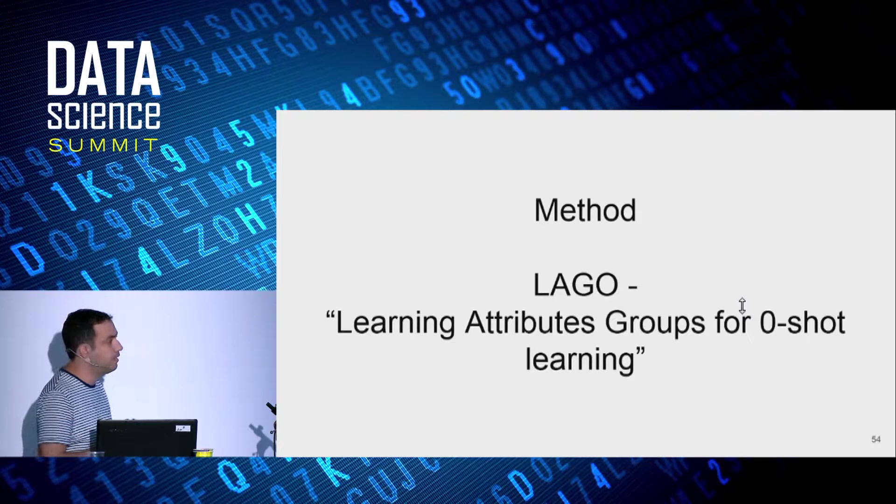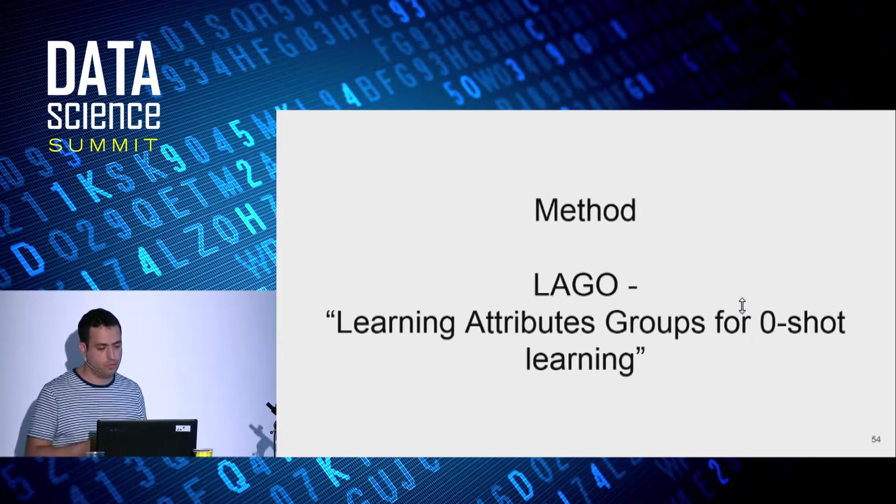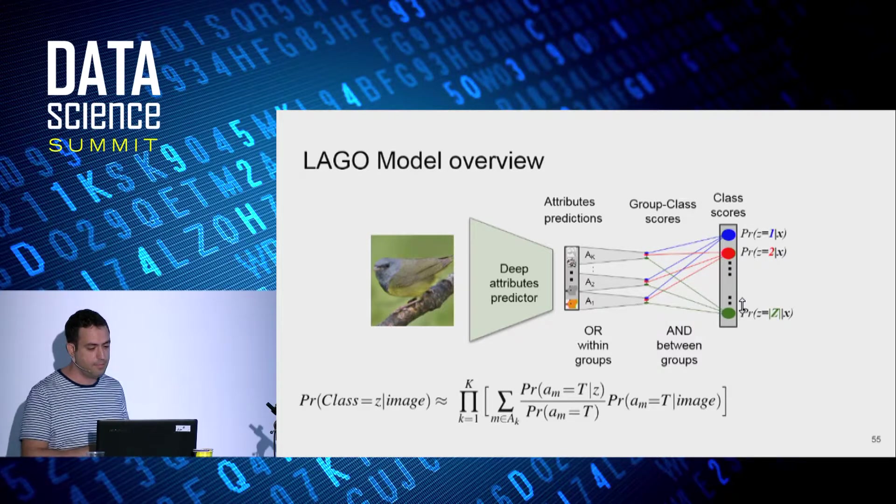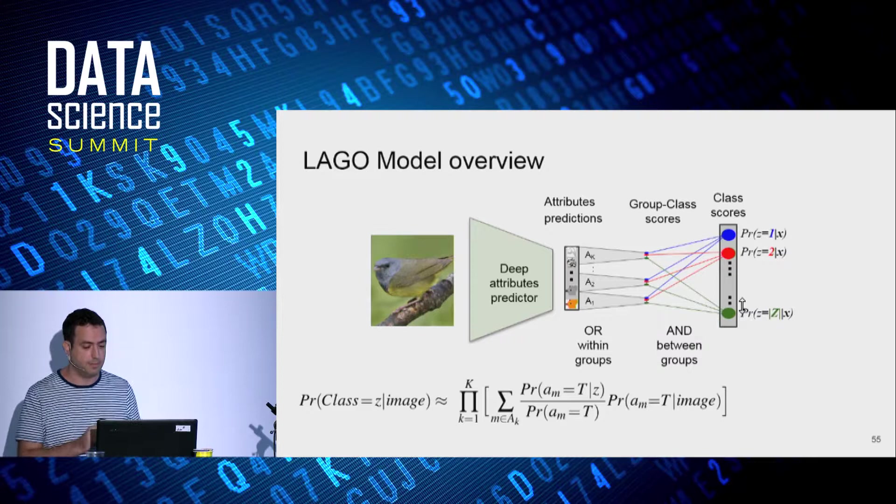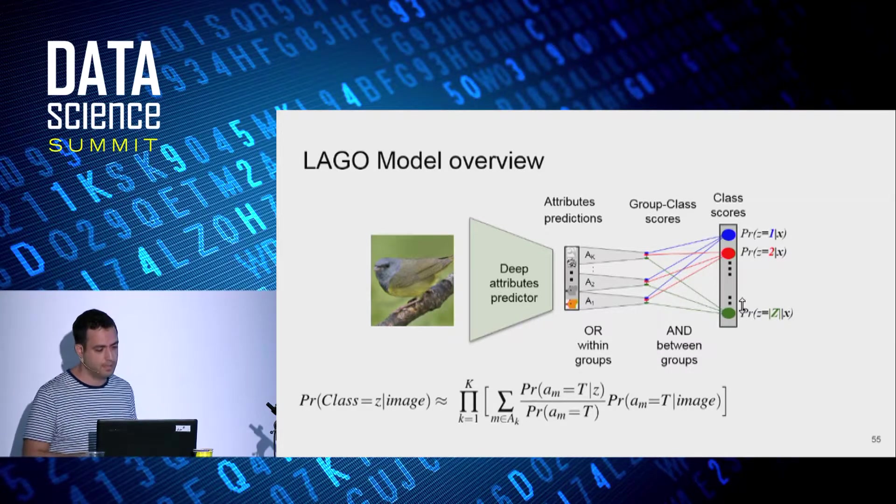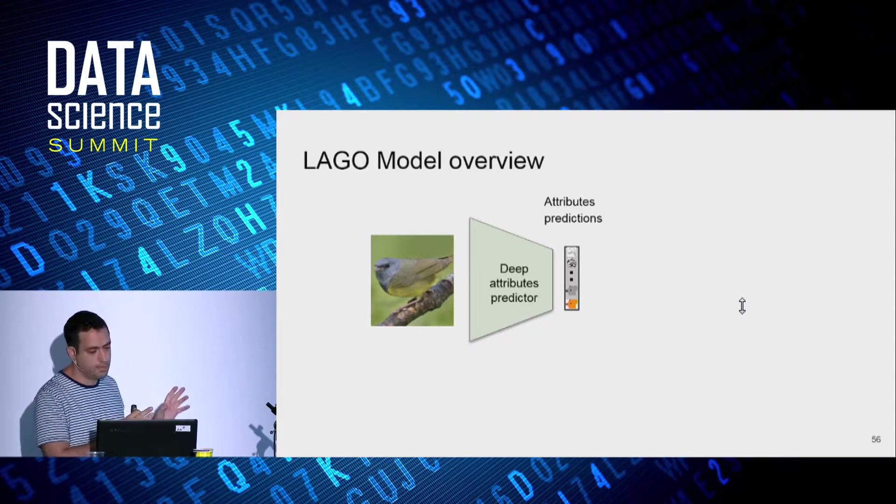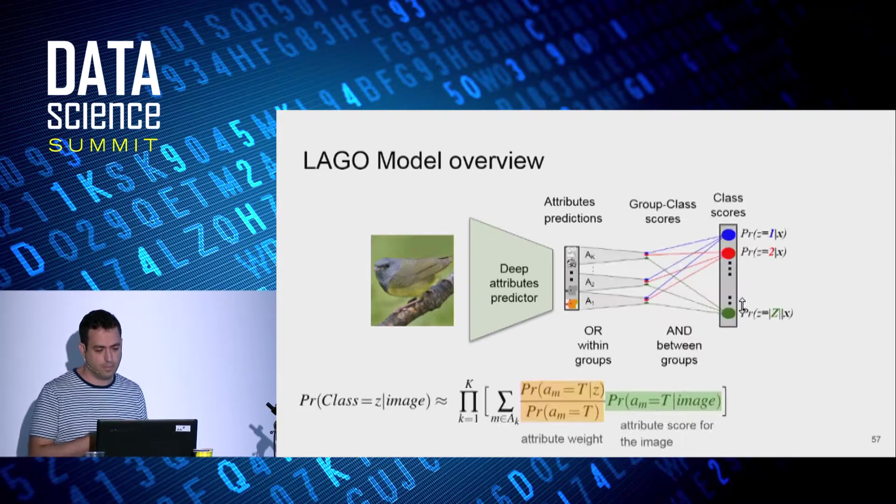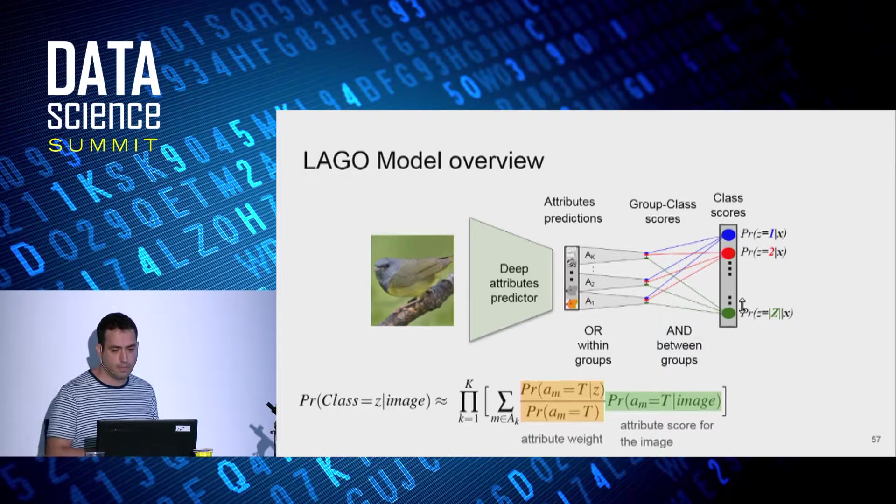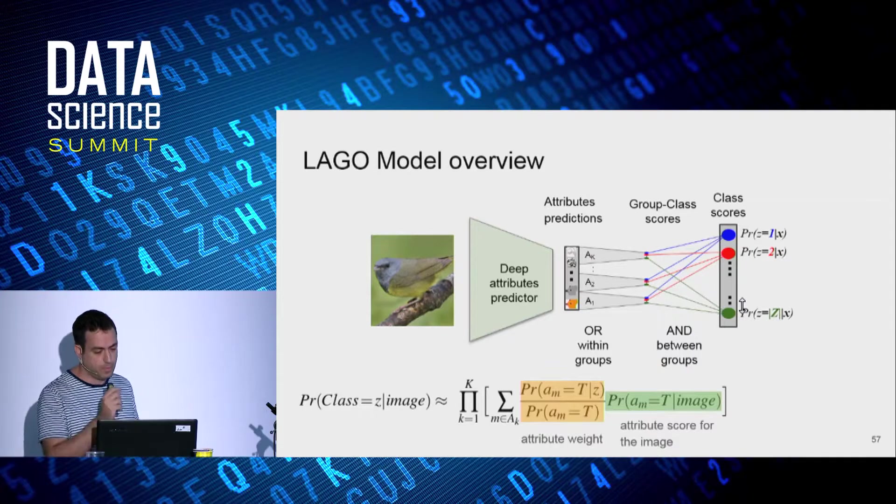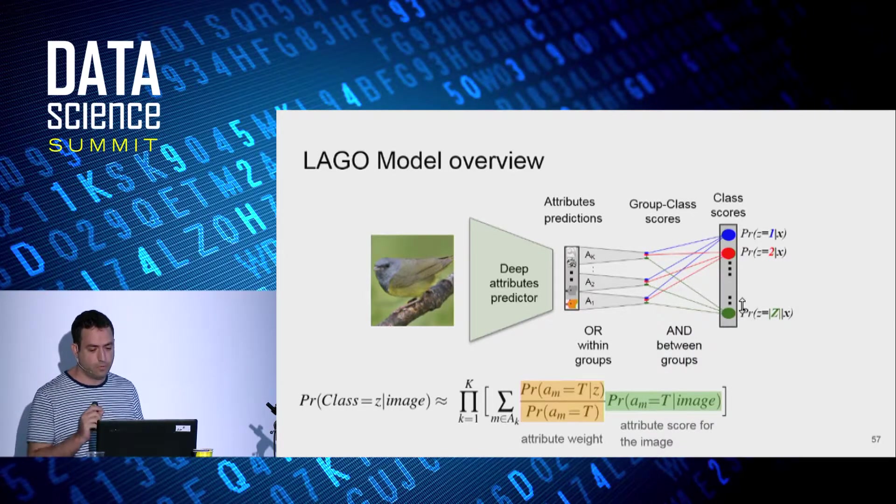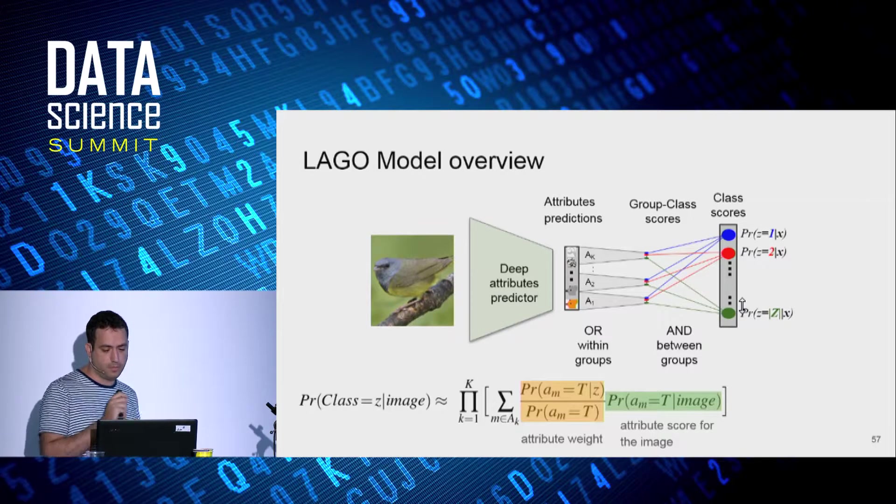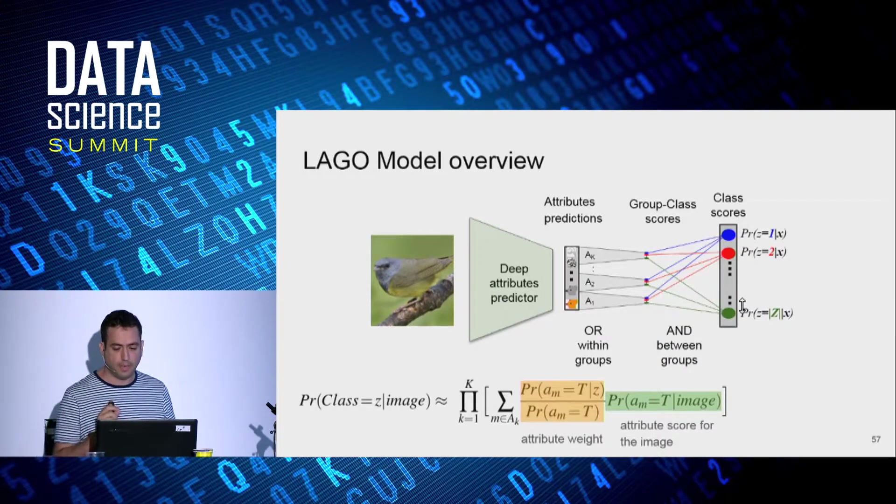So I'm going to describe our method, LAGO, which is Learning Attribute Groups for Zero-Shot Learning. And we see here an overview of our deep model. At first glance, it looks complex, but in fact it's quite simple, so let's just break it into pieces. So the first part is just mapping an image to attribute predictions, as we did in DAP. Okay, so this gives us the description. On the second part, attributes are gathered to groups, we know them as A_k. And each group evaluates a soft OR by using a weighted sum within the attributes. The last part, we use a soft AND as a product of probabilities to compose its category from its groups.